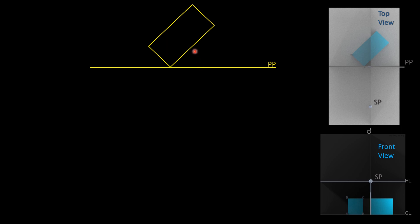In the top view, the picture plane is drawn as a line, with the prism edge at 45 degrees inclined to it. The rectangular prism is labeled with corners A, B, C, D on one face and P, Q, R, S on the other. In the top view, S and R are visible. The central plane passes through the center of the prism.